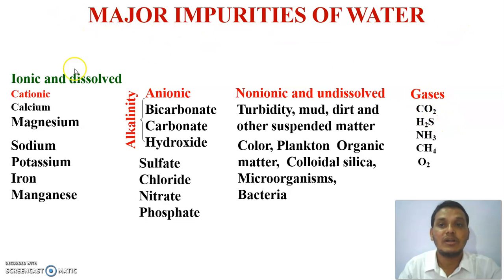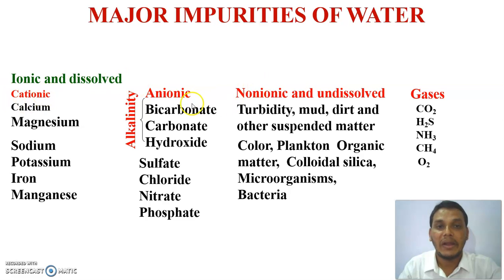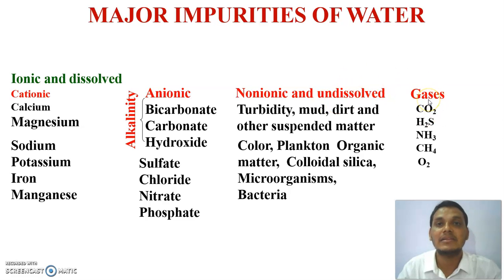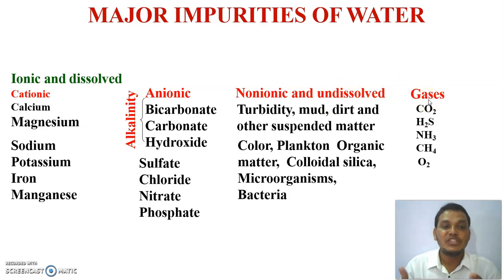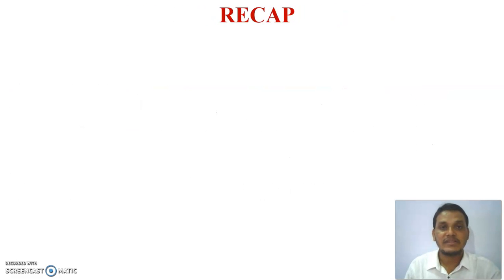The major impurities in a water sample can thus be categorized as: ionic and dissolved impurities (cationic and anionic), non-ionic and undissolved impurities, and dissolved gases.